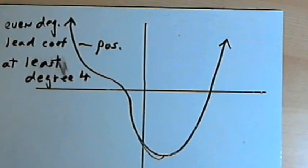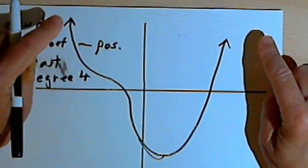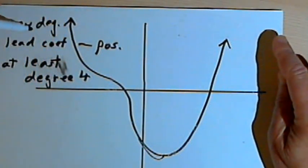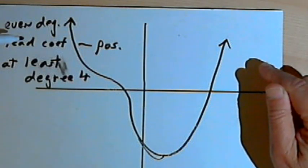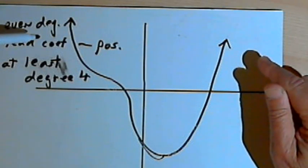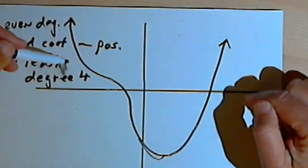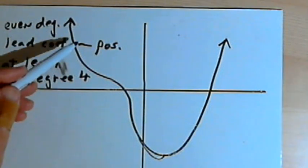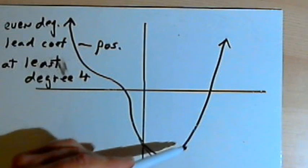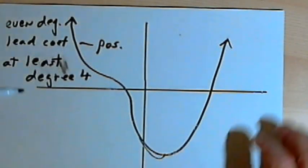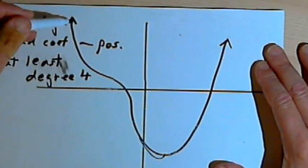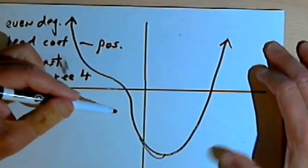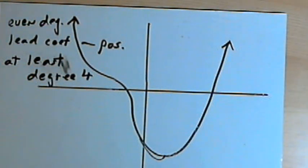So the basic idea is look at your end behavior. Decide whether it's an even degree or an odd degree polynomial. Also decide whether the leading coefficient is positive or negative. You get all of that from the end behavior. Then count the number of turning points that you have, add one to it, and that will tell you what the smallest possible degree would be for your polynomial. Okay? That's about it. Take care. I'll see you next time.